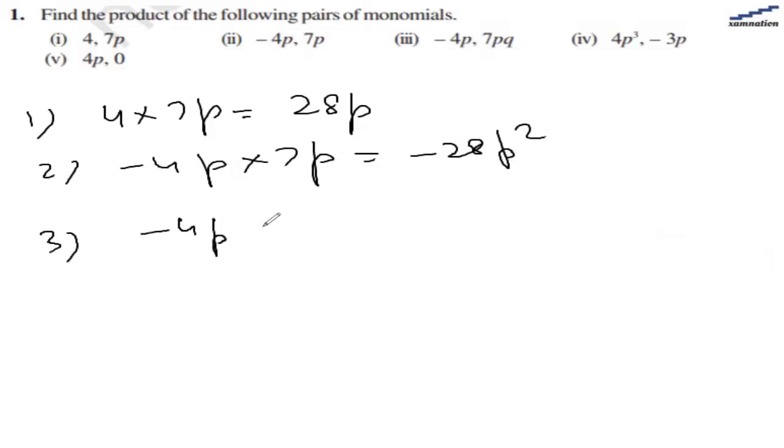Third will be -4p multiplied by 7pq. And that will be -28 and p squared q.